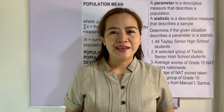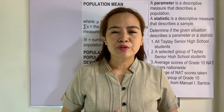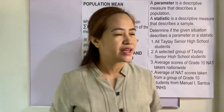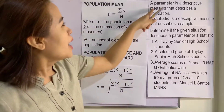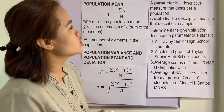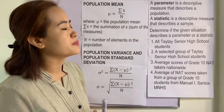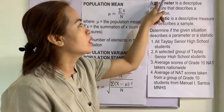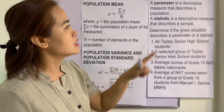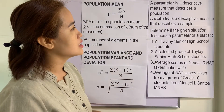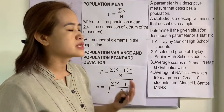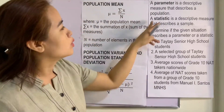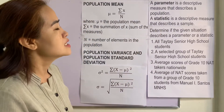Welcome back to my channel. Our topic for today is distinguishing parameter and statistic. A parameter is a descriptive measure that describes a population — everything about a population we call a parameter. A statistic is a descriptive measure that describes a sample — everything about samples we call a statistic.